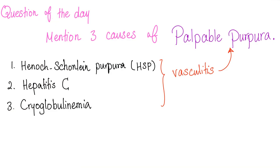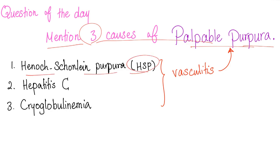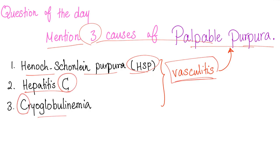Two videos earlier I asked you to mention three causes of palpable purpura. Here are three: Henoch-Schönlein purpura, which is the most common vasculitis in children; hepatitis C; and cryoglobulinemia. There are many other causes and we will discuss this soon.